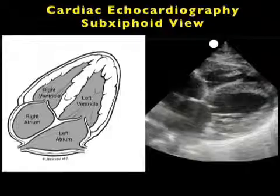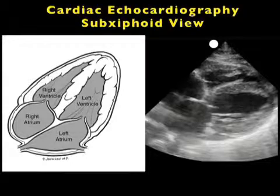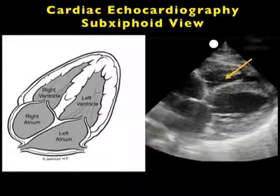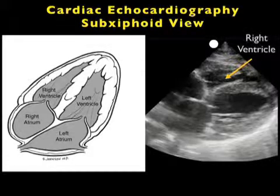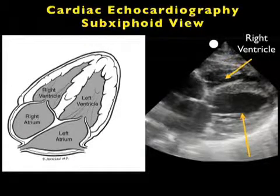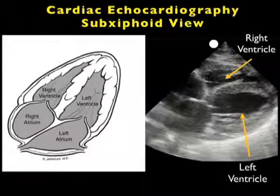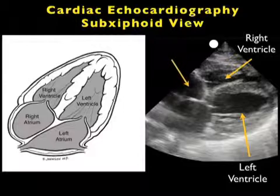Let's now take a look at the image that you'll obtain from the subxiphoid view of the heart. Here's a pictorial to the left and an ultrasound image to the right. The first chamber that we'll encounter directly below the liver — which is our acoustic window in this case onto the heart — will be the right ventricle. Immediately posterior to the right ventricle, we'll be seeing the left ventricle.